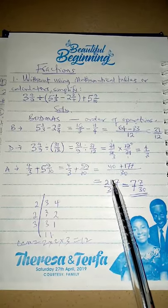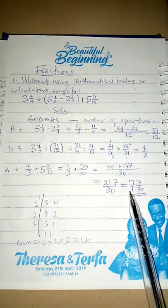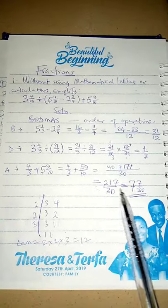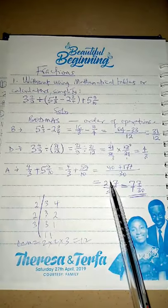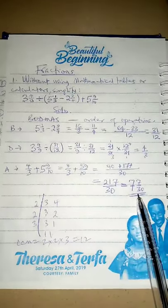Divide 217 by 30: 30 goes seven times giving 210; remove 210 from 217, leaving 7 over 30. So the final answer is seven and seven-thirtieths.